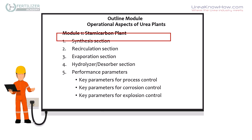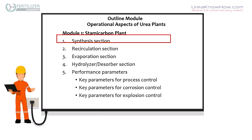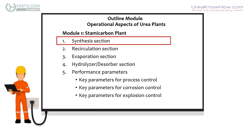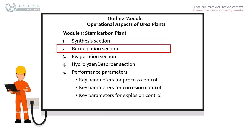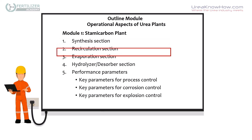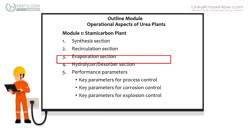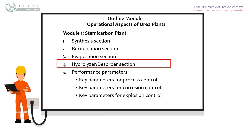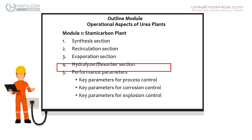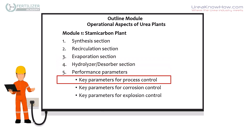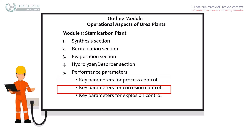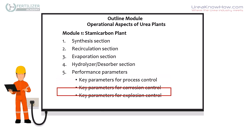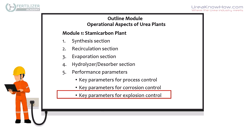Module 1 discusses the Stami Carbon Plant, where we go into detail on the synthesis section, the recirculation section, evaporation section, hydrolyzer and desorber, and we discuss the performance parameters related to process control, corrosion control, and explosion control.